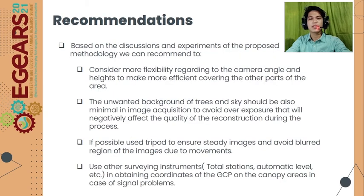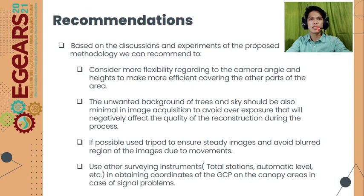For the recommendations, based on the experiments, consider more flexibility regarding camera angle and height to more efficiently cover the area. Unwanted background of trees and sky should be minimal during image acquisition to avoid overexposure that would negatively affect quality and reconstruction. If possible, use a tripod to ensure steady images and avoid blurred regions due to movement, and use other surveying instruments for obtaining GCP coordinates in canopy areas where signal problems may occur.